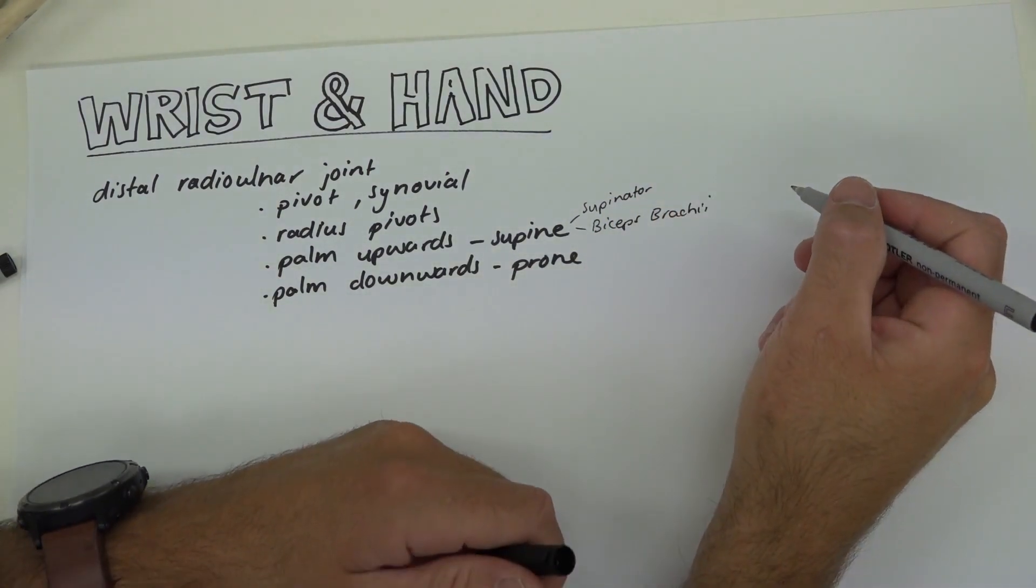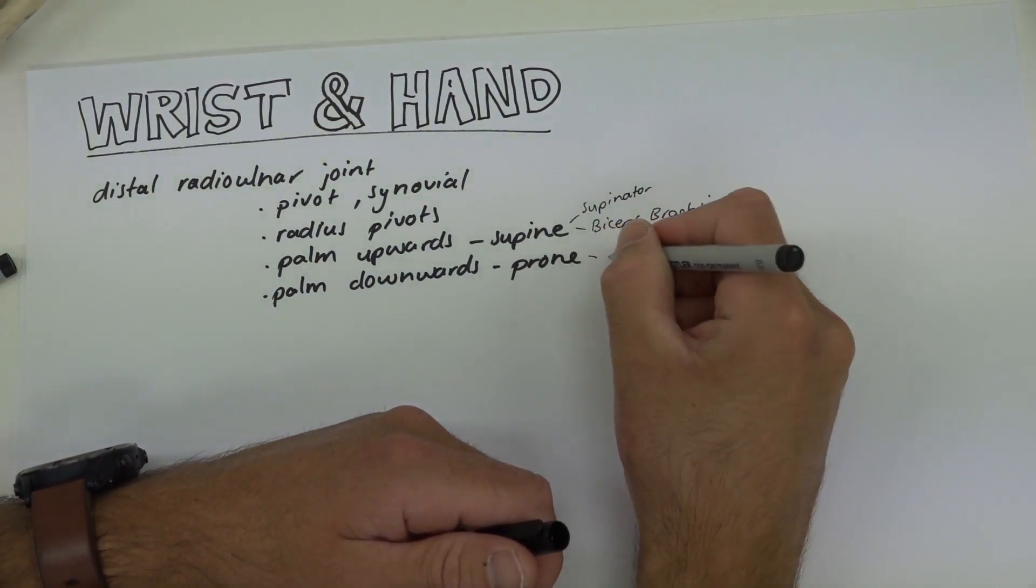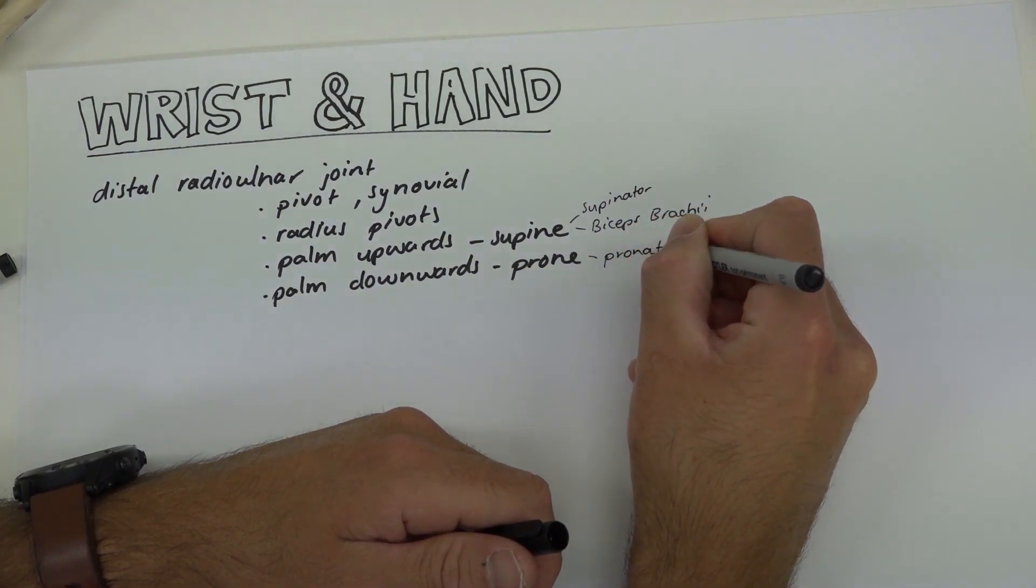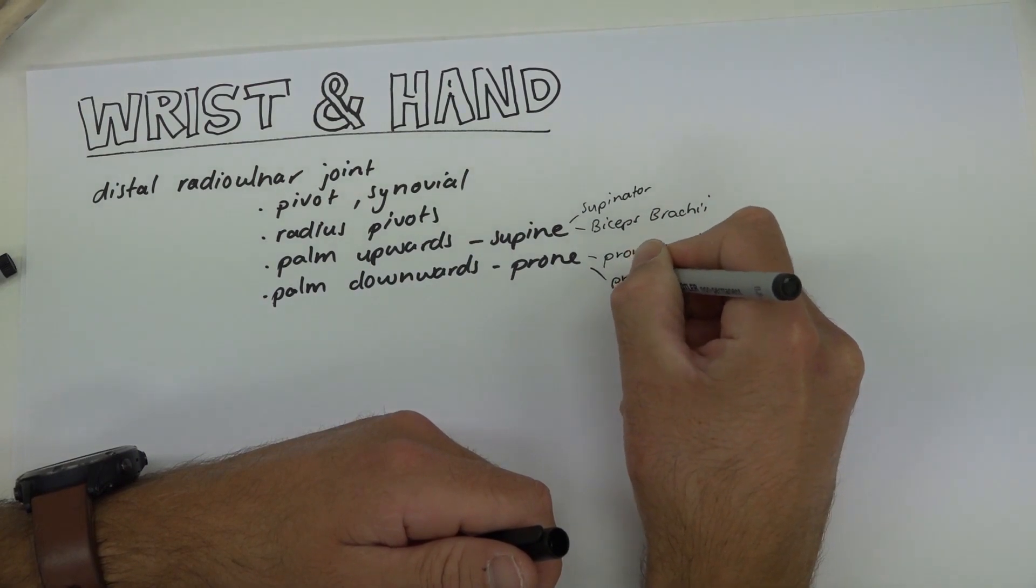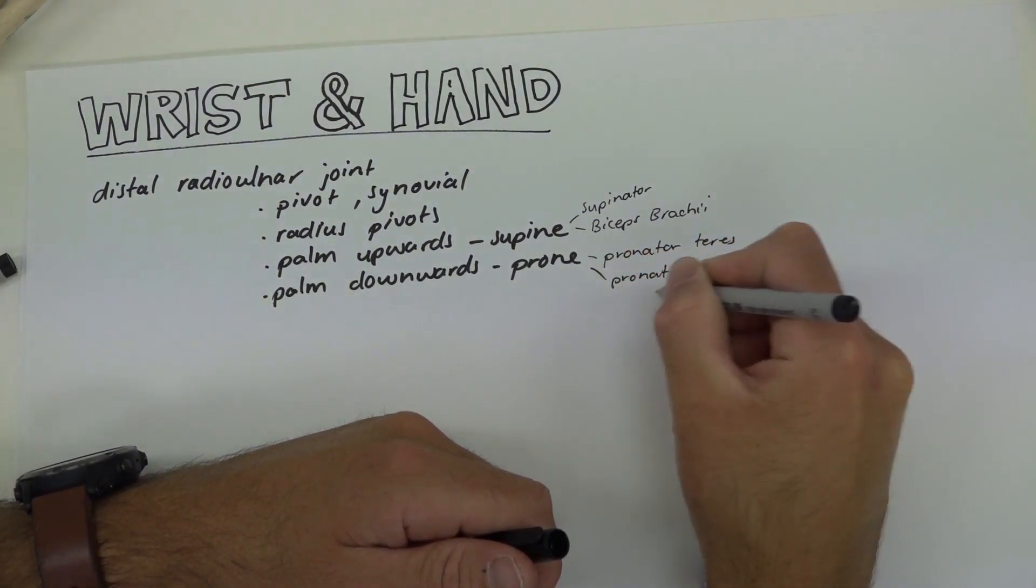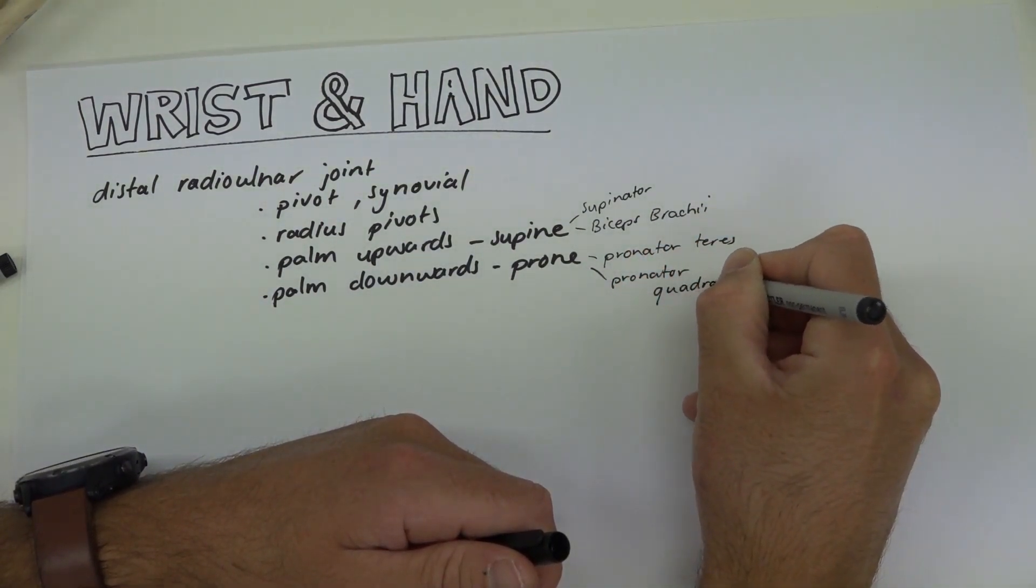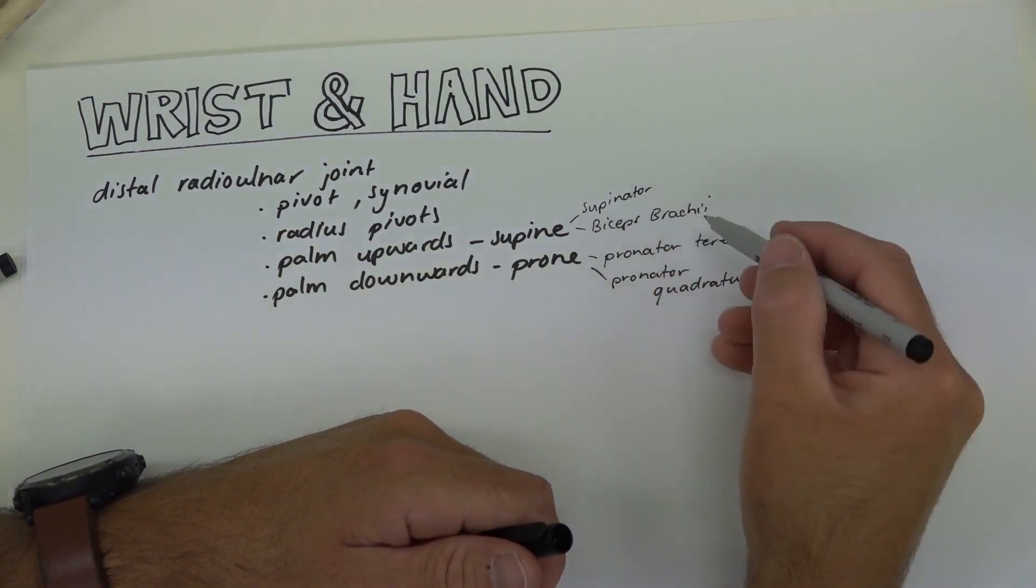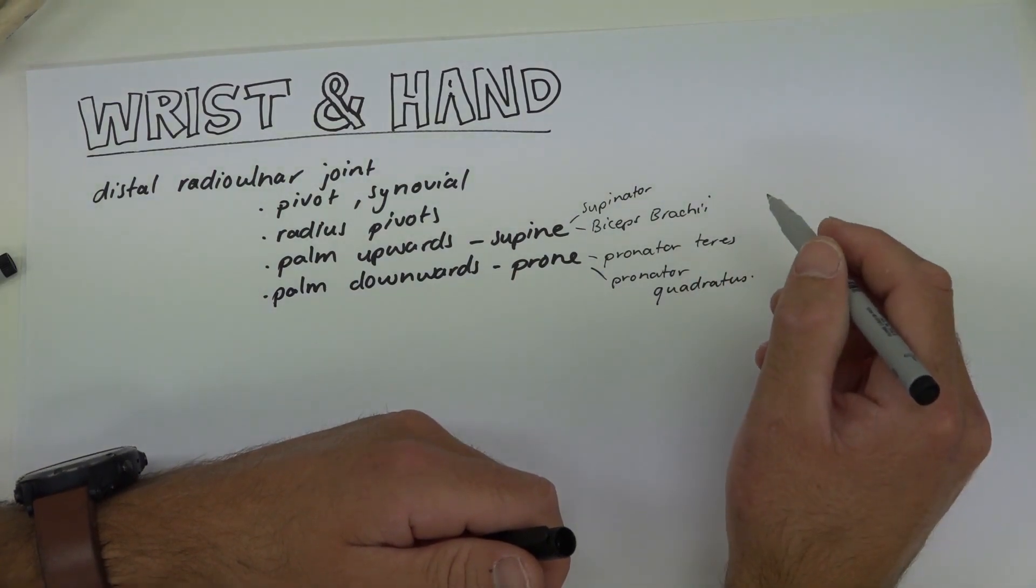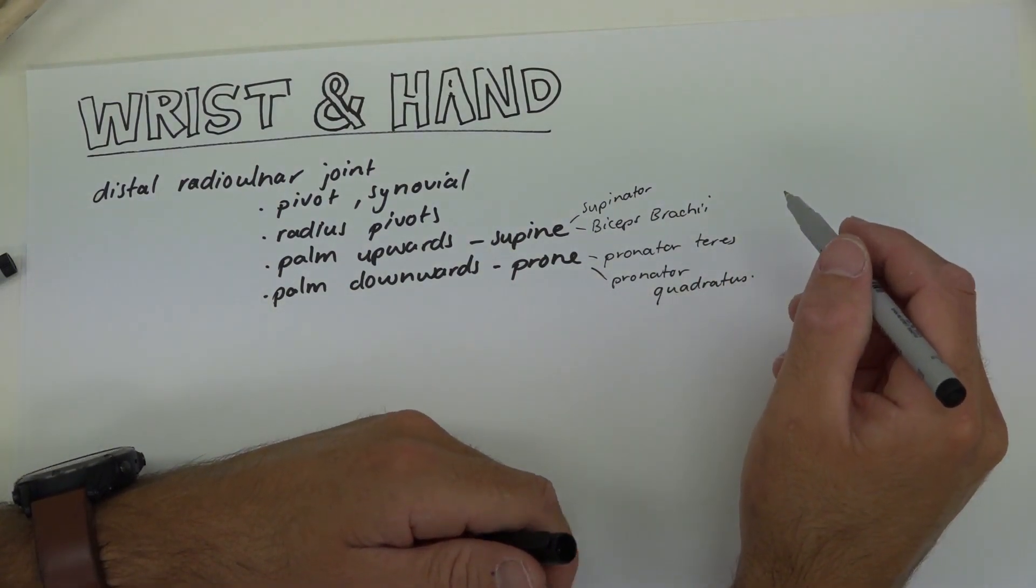For pronation we have pronator teres and pronator quadratus. These muscles are innervated by your median nerve, the supinator by radial, and the biceps brachii by the musculocutaneous which we talked about in the neurovascular video.